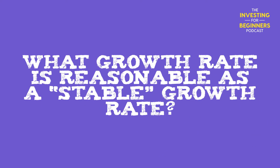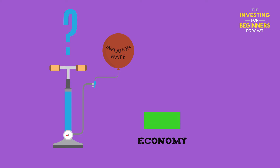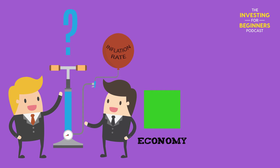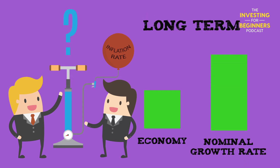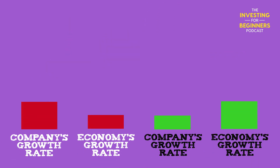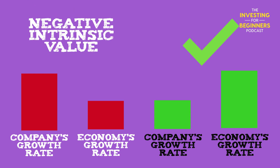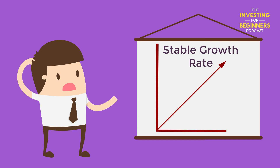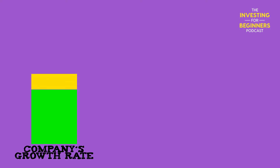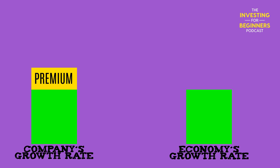The second issue relates to what growth rate is reasonable as a stable growth rate. This growth rate has to be less than or equal to the growth rate of the economy in which the firm operates. This does not, however, imply that investors will always agree on what this rate should be. Given the uncertainty associated with estimates of expected inflation and real growth in the economy, there can be differences in the benchmark growth rate used by different analysts — investors with higher expectations of long-term inflation may project a nominal growth rate in the economy that is higher. The growth rate of a company may not be greater than that of the economy, but it can be less. Firms can become smaller over time relative to the economy. A growth rate larger than the economy would yield a negative numerator, giving us a negative intrinsic value. An investor may also add a premium to the stable growth rate to reflect above-average growth in the initial years.